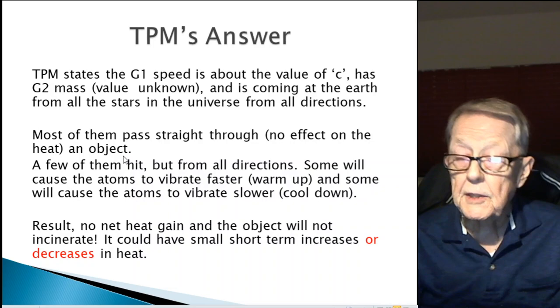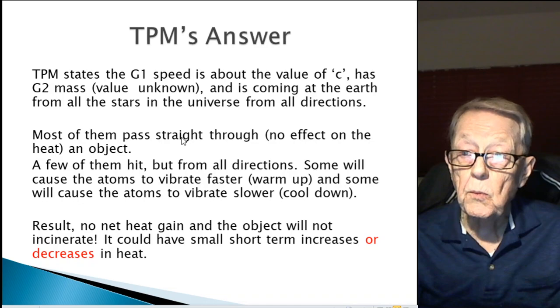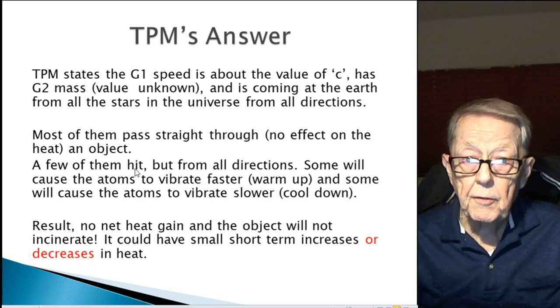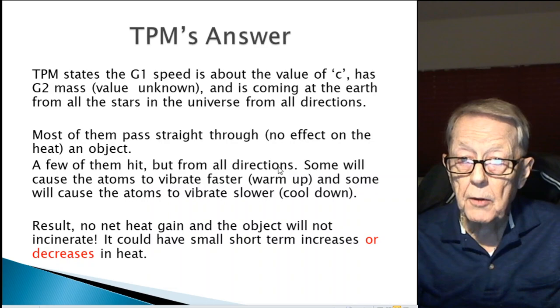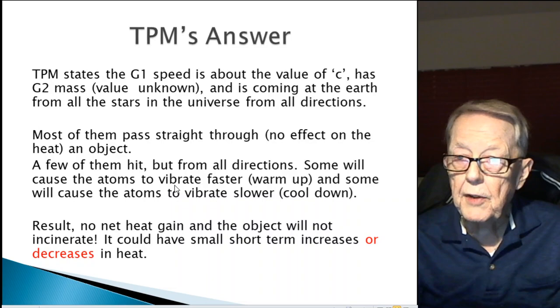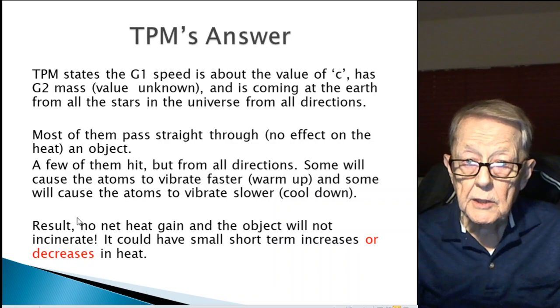In order to heat something up, you've got to hit it and cause the atoms to vibrate more. For example, the number's not right, but let's assume 99% of them pass through and only 1% hit. So the problem's only a very small fraction of what Poincaré was pointing out. But a few of them do hit. That's the whole point. The 1% hit, but from all directions. Some will cause the atoms to vibrate faster because they hit them while they're moving in the same direction. Therefore, the object will warm up when they hit and cause them to increase their vibration.